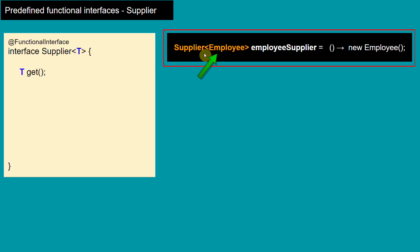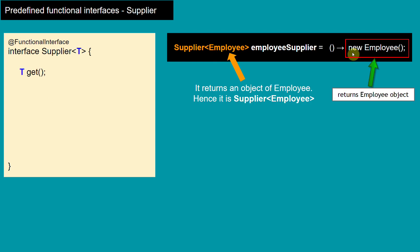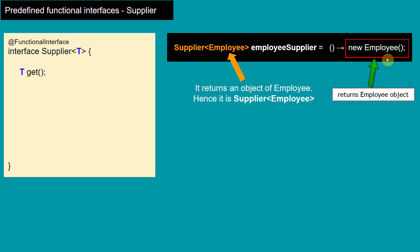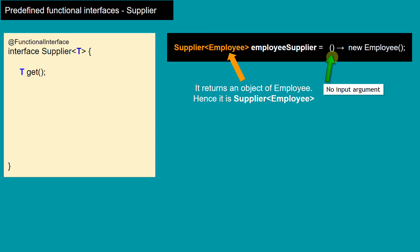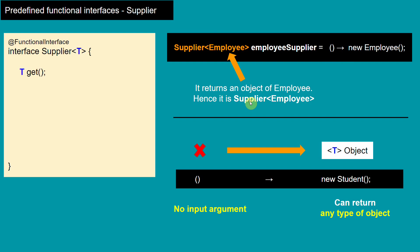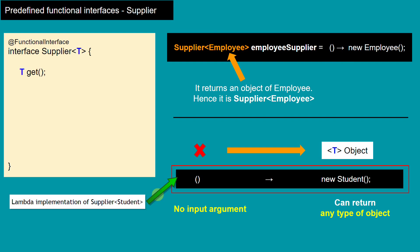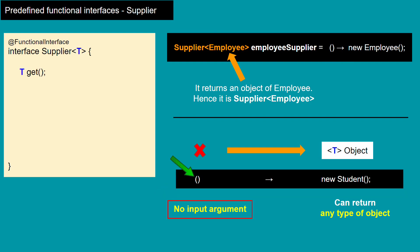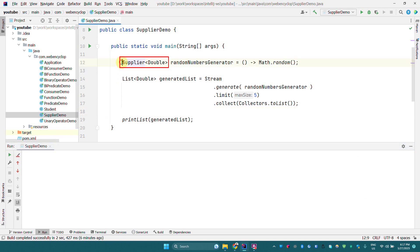If you consider this example, this is a Supplier of Employee because it is returning an object of Employee. If you see the lambda here, it is returning an object of Employee — that's why it is a Supplier of Employee. We do not take any input argument in the lambda. The important thing to note: when we write a lambda for Supplier interface, it should not take any input argument but it should return any type of object.